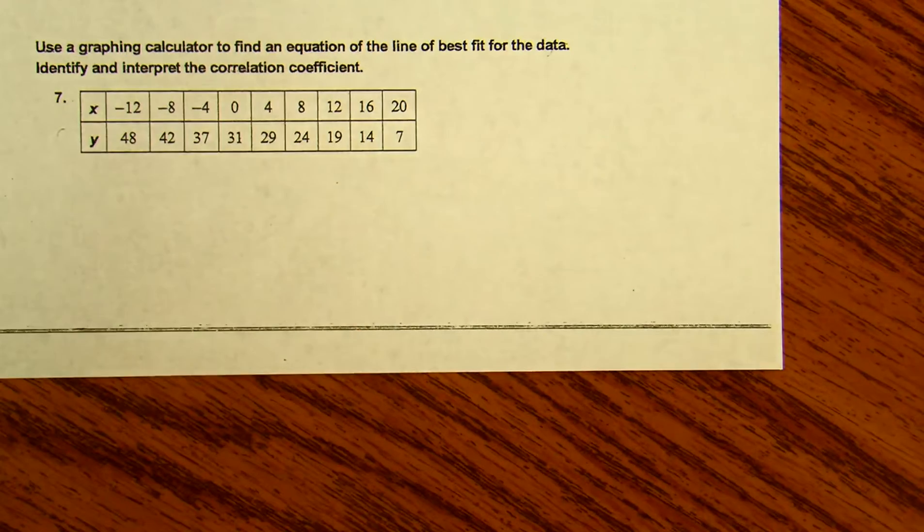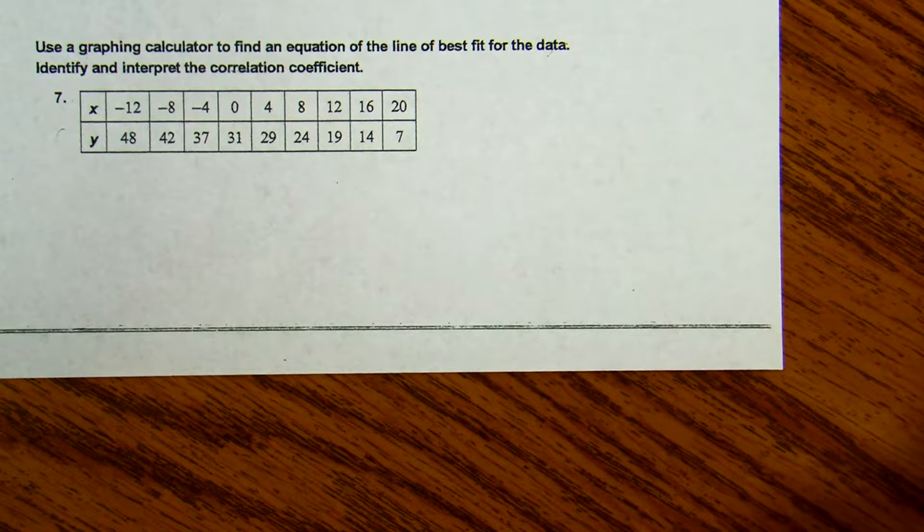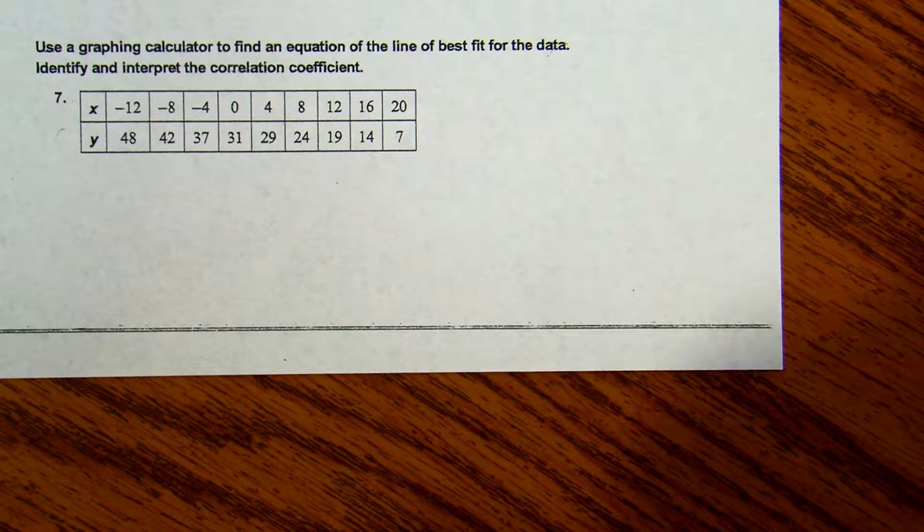Okay, we're going to work on number seven. We're going to use the calculator to find the line of best fit and look at the correlation coefficient to determine whether or not this is a good fit for the data.